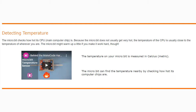Today we're going to continue with activity 2.1, Need Input. We're going to be focusing on how we can detect temperature using our microbit. The microbit checks how hot its CPU or main computer chip is. Because the microbit does not usually get very hot, the temperature of the CPU is usually close to the temperature of wherever you are. The microbit might warm up a little if you make it work hard enough.